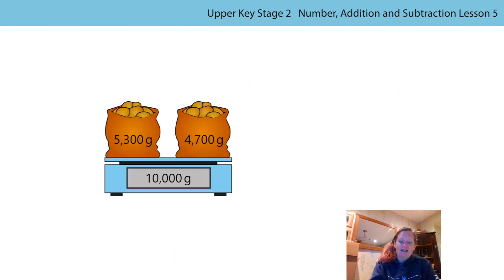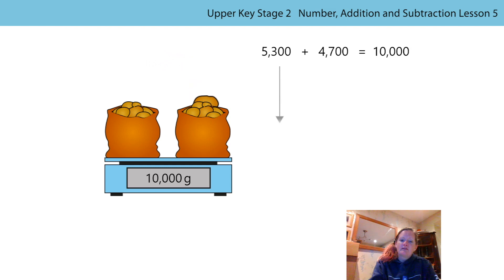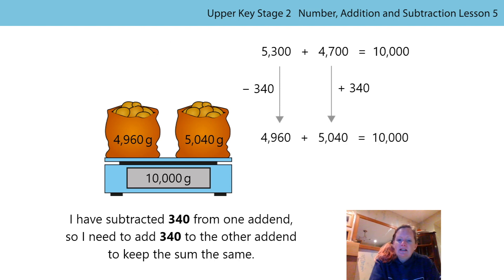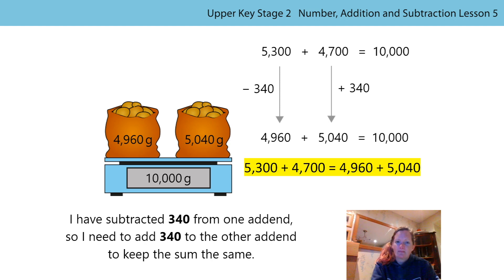Before we start today's learning, I'd just like to quickly review the learning from yesterday where you redistributed 340 grams from one addend to the other addend. You subtracted 340 from one addend so you needed to add 340 to the other addend, and from that you took the original amount and the redistributed amount and you formed a balanced equation. In today's learning, we're going to show you a different representation for balancing equations and we're going to use that to work out some missing numbers in some missing number problems.